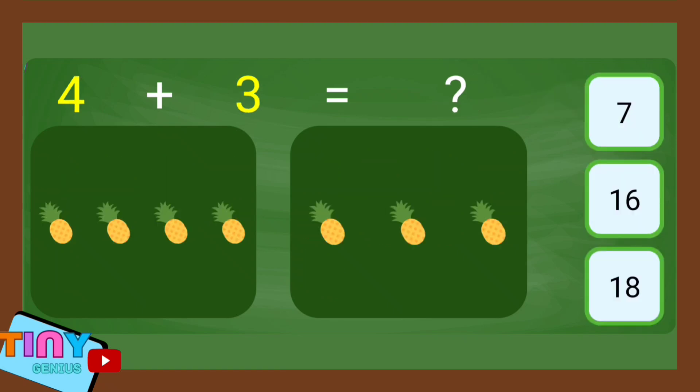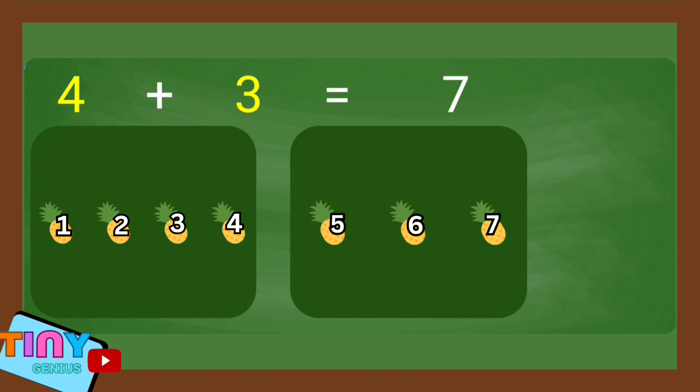4 plus 3 equal. 1, 2, 3, 4, 5, 6, 7. Good job.